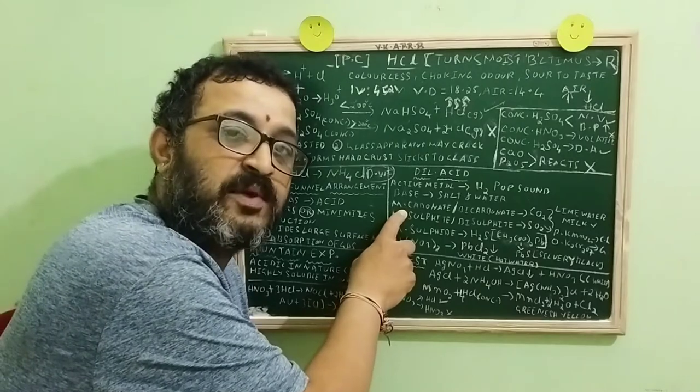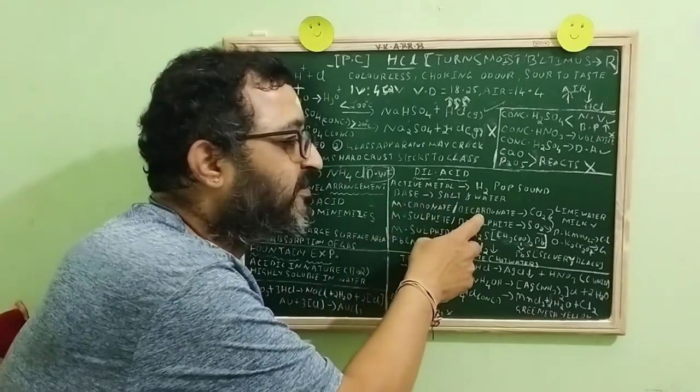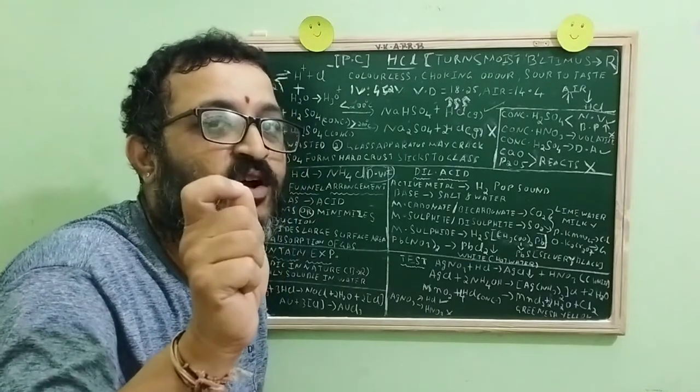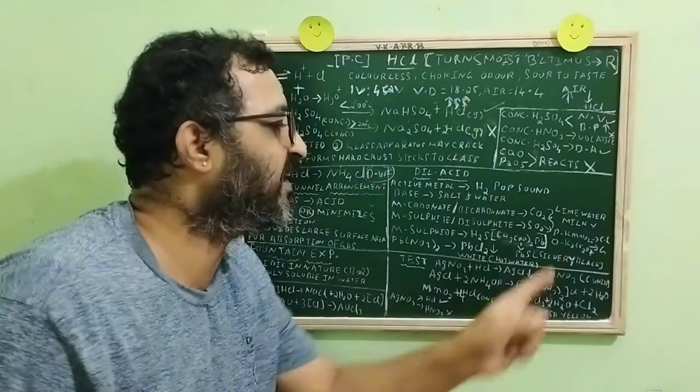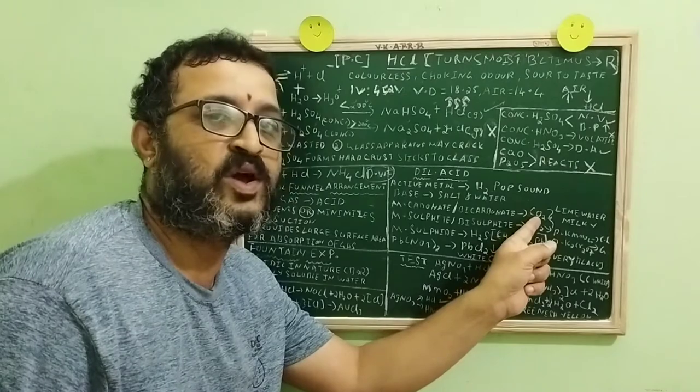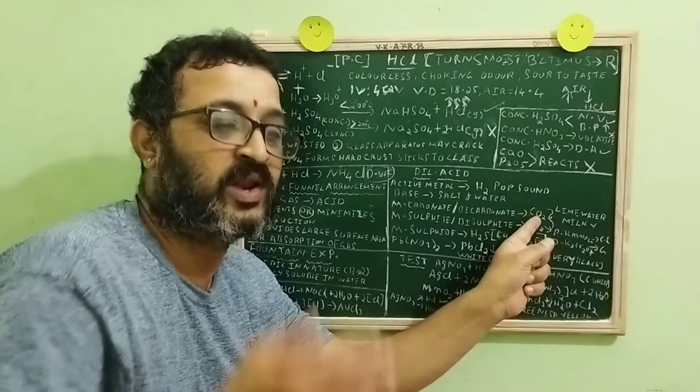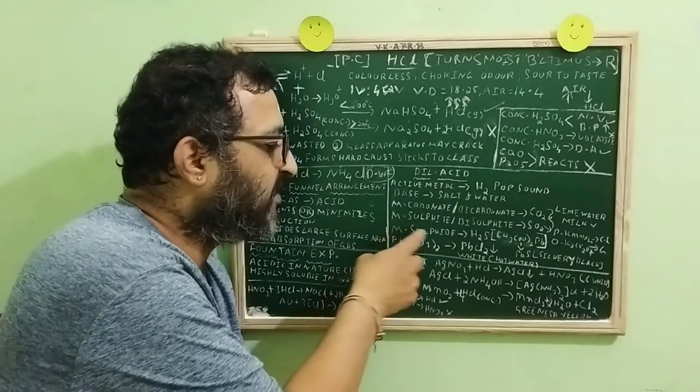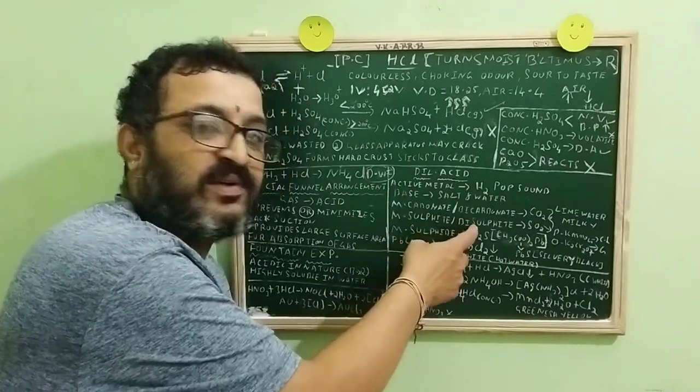Dilute acids with metal carbonates or bicarbonates, it is going to produce a gas that turns lime water milky. Definitely, you are right. It is carbon dioxide. No, you will get salt, water and carbon dioxide.